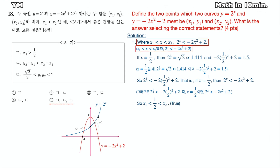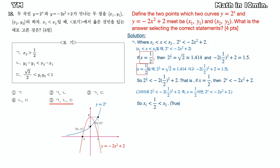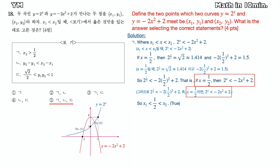If x is between x1 and x2, then 2 to the x power is less than negative 2 times x squared plus 2, as seen by the graph. If I plug 1/2 into x, 2 to the x power becomes the square root of 2, which is approximately 1.414, and negative 2 times x squared plus 2 becomes 1.5. So 2 to the x power is less than negative 2 times x squared plus 2 where x equals 1/2, meaning 1/2 is between x1 and x2. So the first statement is true.